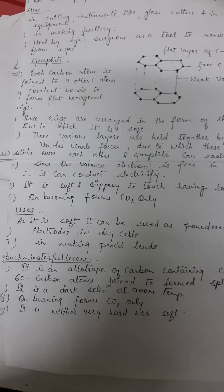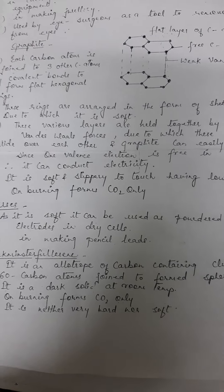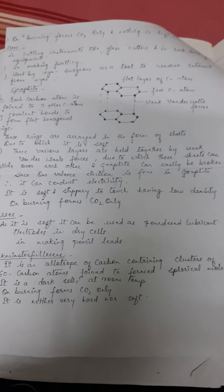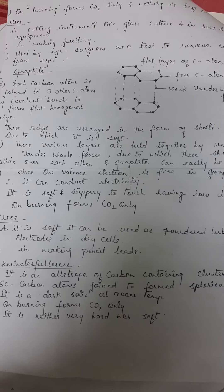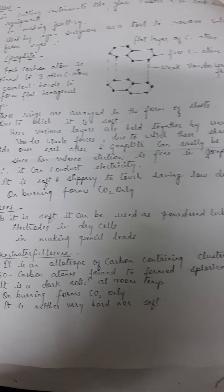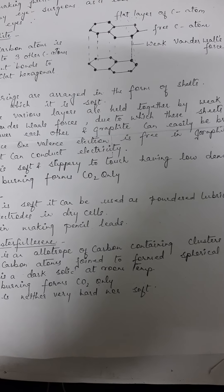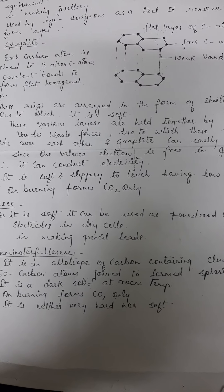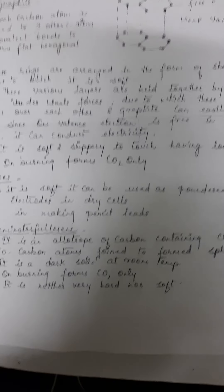Graphite's use is in pencil lead, most important for students. And it is soft. It is used as a powdered lubricant. And the electrodes you have seen, you remember we place two electrodes in the first chapter on chemical reactions and equations in electrolysis - those are made of graphite, you can say carbon. Electrodes in dry cells.